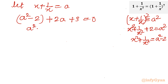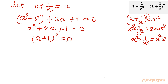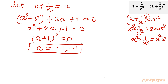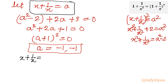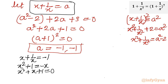We get a^2 + 2a + 1 = 0, which is (a + 1)^2 = 0. So a = -1 with multiplicity 2. Substituting back, x + 1/x = -1, multiply by x to get x^2 + 1 = -x, so x^2 + x + 1 = 0. This is a very familiar equation.